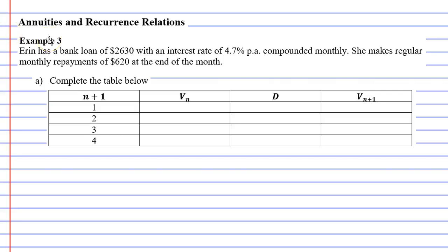In this video, we're going to complete example 3. It says that Erin has a bank loan of $2,630 with an interest rate of 4.7% per annum compounded monthly. She makes regular monthly repayments of $620 at the end of the month. Question A wants us to complete the table below.